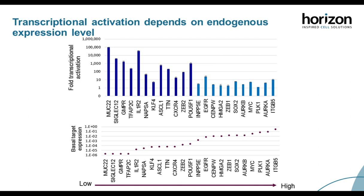We started by looking at the level of transcriptional activation across a large set of genes. We observed that activation varies depending on the gene, from a few fold to thousands of fold. We also looked at basal expression levels before activation and found that for genes either not expressed or expressed at low levels, we generally observed higher activation, whereas genes more highly expressed have lower fold activation. This is similar to what has been reported in literature—it makes sense that activating something not expressed is easier than boosting a gene that is already active.